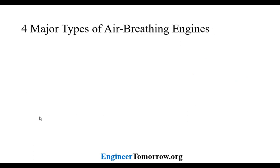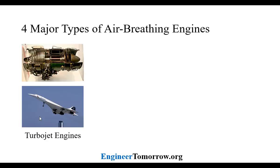Next, I'll talk about the four major types of air breathing engines. We'll start out with the turbojet engine. The turbojet engine is comprised of a compressor section at the front of the engine, a combustor, and then a turbine section. I'll talk in the next couple of slides about what each of these components do, but I just wanted to show the differences between the different types of air breathing engines.